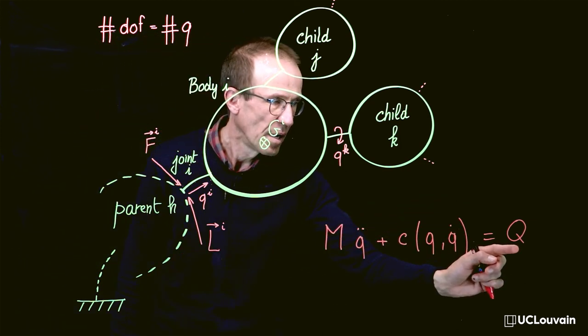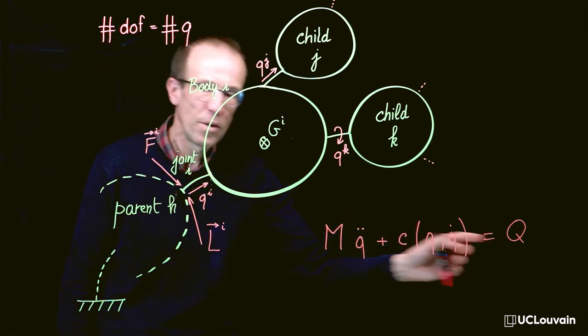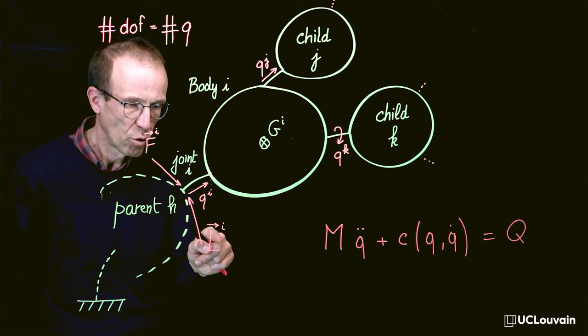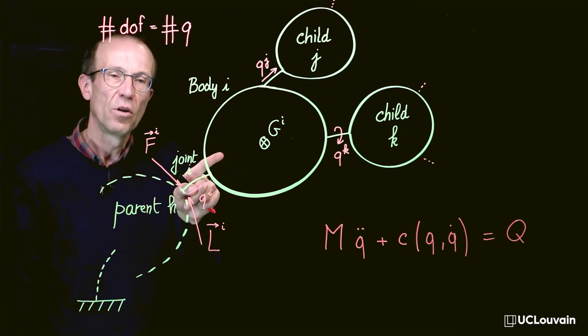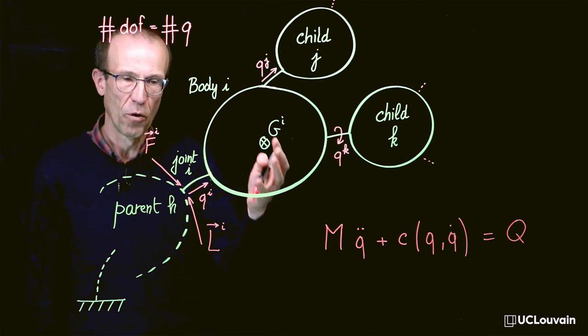And Q, especially when we are using relative coordinates, represents the projection of the joint force and torque in the direction of the joint. And so they are called the generalized joint forces.